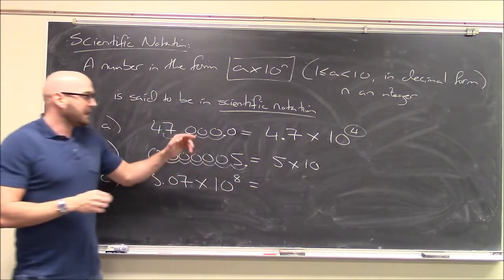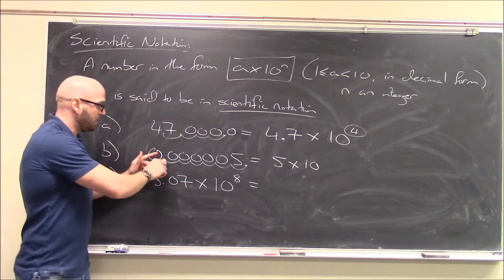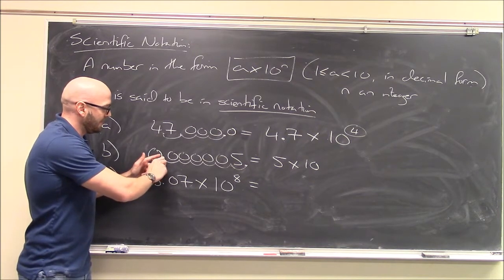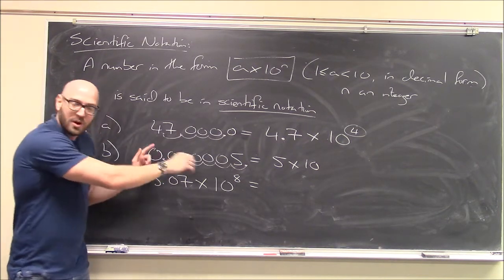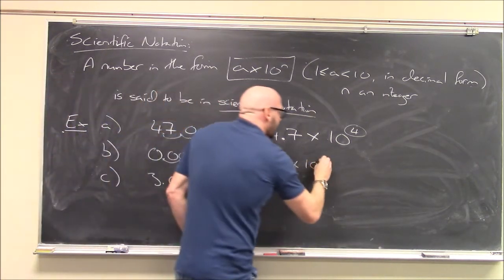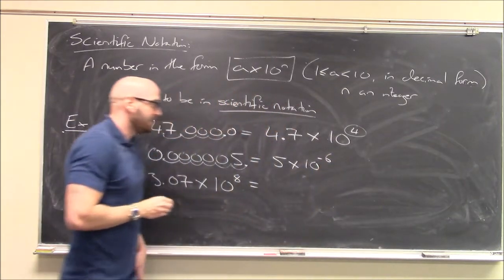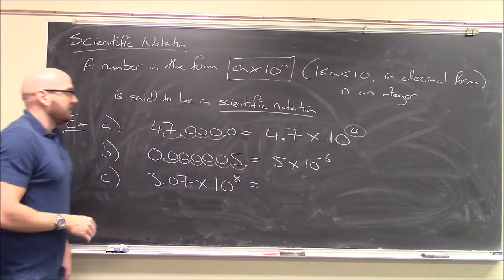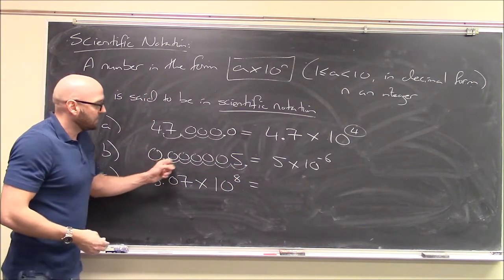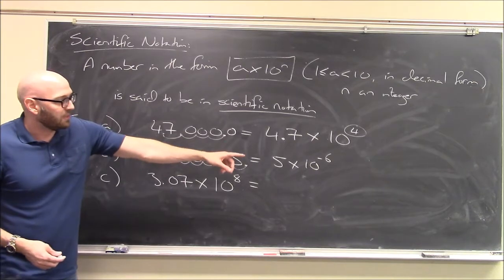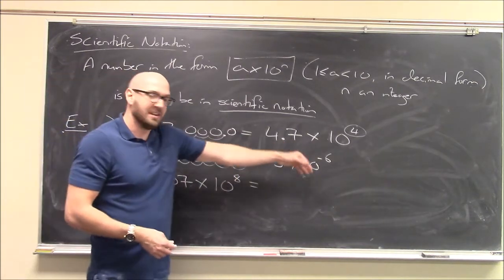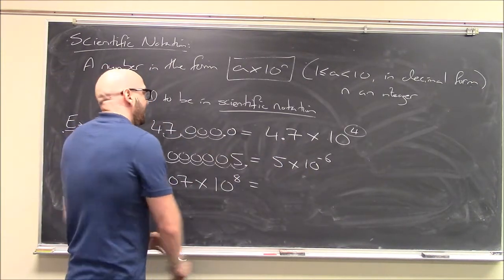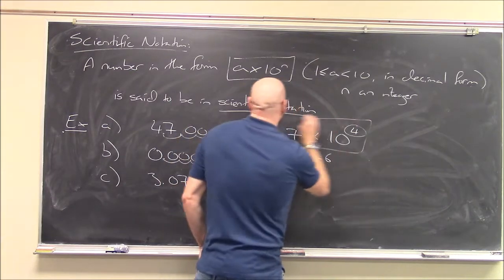Is that what we said? 1, 2, 3, 4, 5, 6. Yeah. So, 6 places to the right. Moving the decimal 6 places to the right corresponds to a negative exponent. 5 times 10 to the minus 6. So these are our two answers so far.